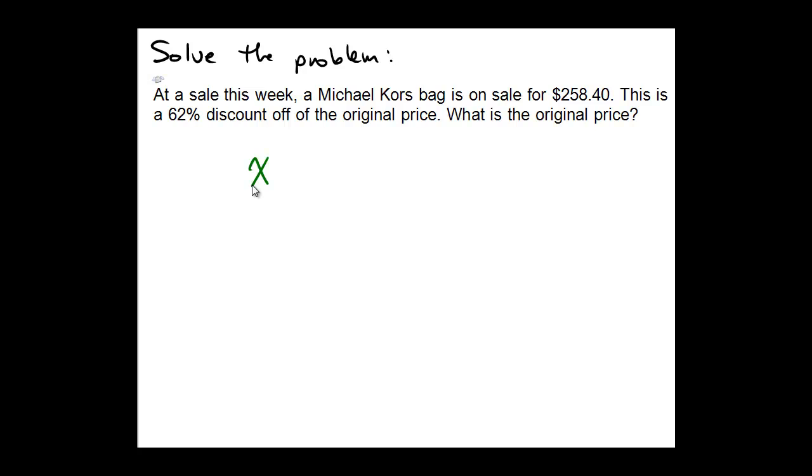Now it gets discounted, subtracted by 62% of the cost of the bag. So this right here would represent the cost of the bag. The 0.62X represents 62% of the price of the bag, which is supposed to be subtracted off in order to give us the sale price. And the sale price as stated in the problem is 258.40.